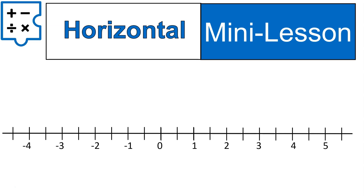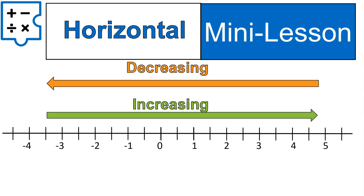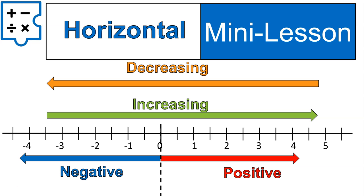First off, a number line is horizontal like this. When you're increasing, it is a number moving from the left to the right. When it's decreasing, the number is moving from the right to the left. That line right there that you see is anything on the left of that number, zero, is negative. Anything on the right of that number is positive. That's the basics of a horizontal number line.